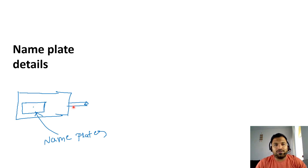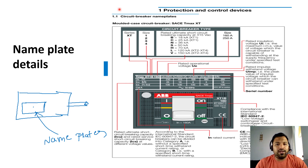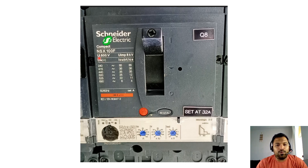Let's get back to circuit breakers. Circuit breakers also have nameplate details. This is a circuit breaker nameplate. Let's see one practical circuit breaker and what is written inside its nameplate details. This is one brand — a reputed brand. In the nameplate details, you can see the brand name, and NSX 100F is the model number. Then UI, UiMP, and UE — these are the voltages.